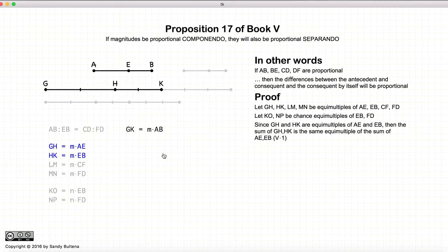Alright, now if you recall from Proposition 1, if we have two magnitudes, AE and EB, and we have another two magnitudes, GH and HK, which are equal multiples of the first two, then the sum of these will be the same equal multiple. In other words, GH plus HK will also be the same multiple of AE plus EB as the original. So from that, GH plus HK, which is GK, will be equal to m times AE plus EB, in this case is AB. So this comes from Proposition 1.